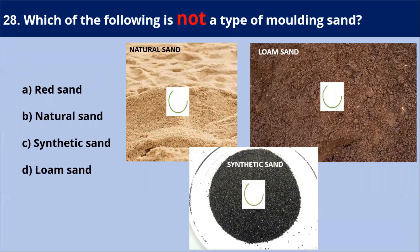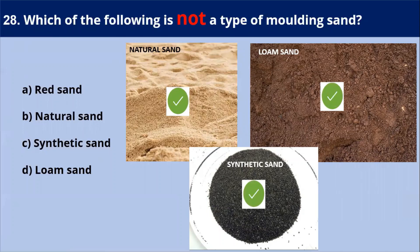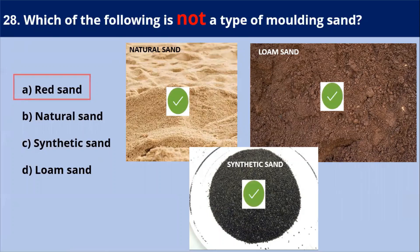Next question: which of the following is not a type of molding sand? Natural sand, loam sand, and synthetic sands are types of molding sand used effectively in the casting process. However, red sand is not counted among the molding sands. Our answer is — red sand. Thank you friends.